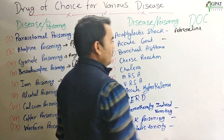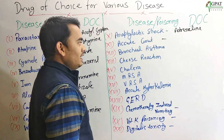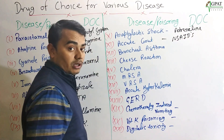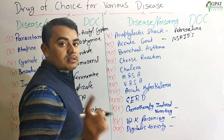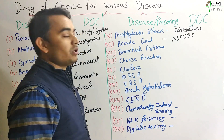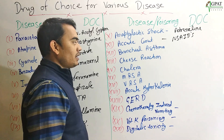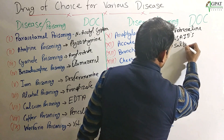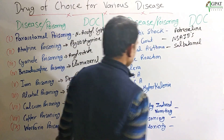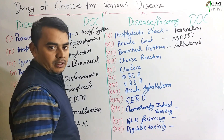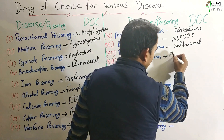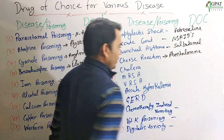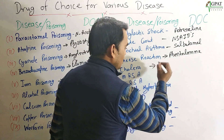Next: Acute Gout. For acute gout, NSAIDs — non-steroidal anti-inflammatory drugs — are given. Note that in chronic gout the approach differs, but for acute gout NSAIDs are used. Next: Bronchial Asthma. For bronchial asthma, Salbutamol is the drug of choice.